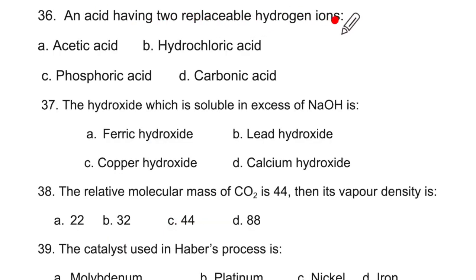An acid having two replaceable hydrogen ions will be H2SO4. Carbonic acid is H2CO3. Like H2SO4 it has two hydrogen ions per molecule. The hydroxide which is soluble in excess of NaOH are Zn, Al or Pb the amphoteric metals. This is the one, lead hydroxide.